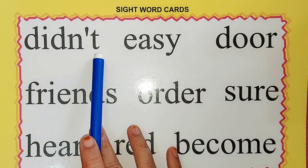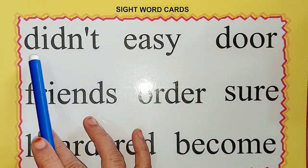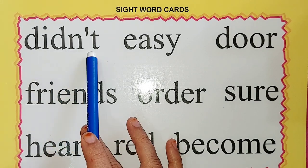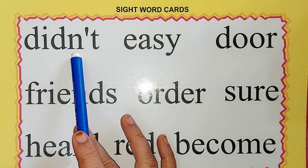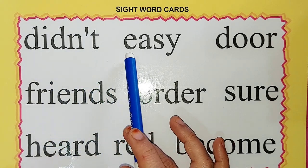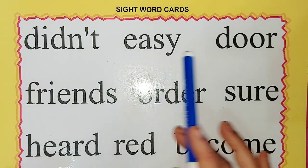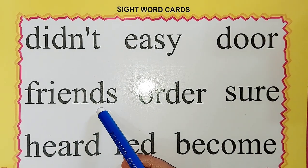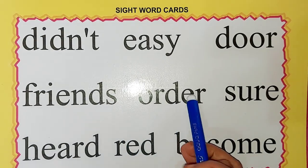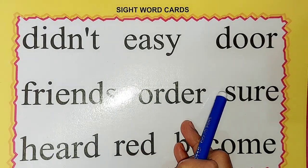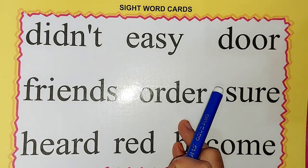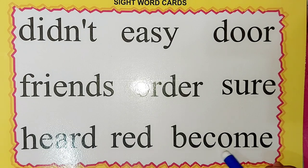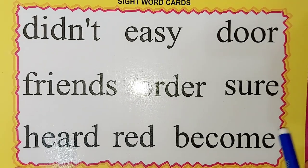D-I-D-N apostrophe T: didn't. This is the short form of 'did not' — didn't, or did not, both are right. E-A-S-Y: easy. D-O-O-R: door. F-R-I-E-N-D-S: friends. O-R-D-E-R: order. S-U-R-E: sure. H-E-A-R-D: heard. R-E-A-D: read. B-E-C-O-M-E: become.